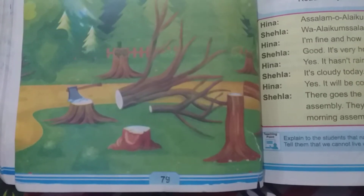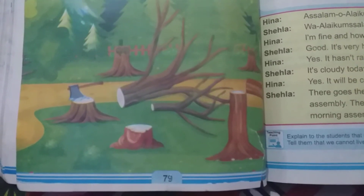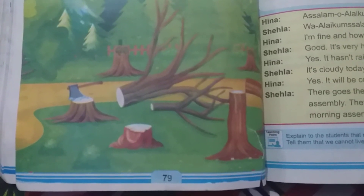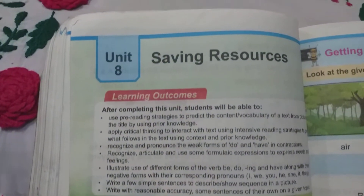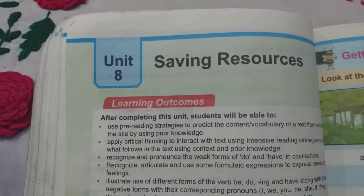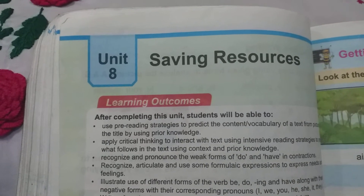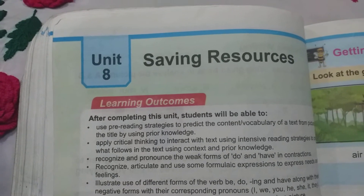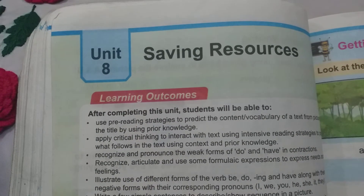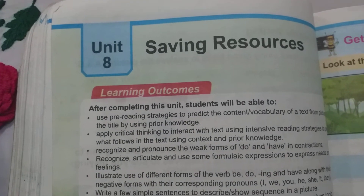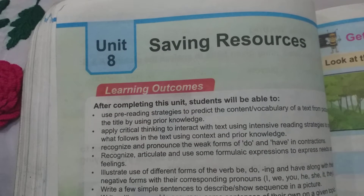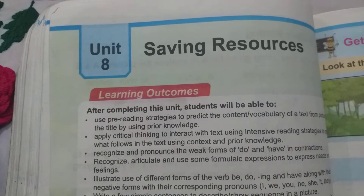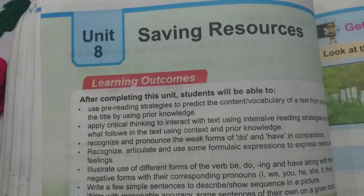Assalamualaikum dear viewers, aaj ki video pay number 78, grade 3 per mabni hai. Is unit ko start karte hain — unit number 8: Using Saving Resources. Learning outcomes, taalimi mahasilat: after completing this unit the students will be able to...